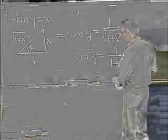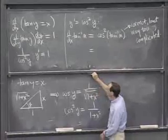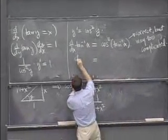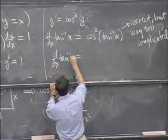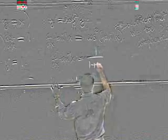And so our answer over here, the preferred answer, which is way simpler than what I wrote up there, is that d by dx of tan inverse x is equal to 1 over 1 plus x squared.